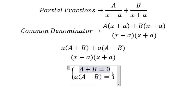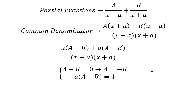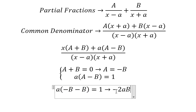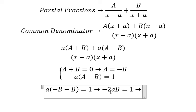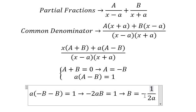So in this one we have A equals negative B. We move B to the right, so we have negative B. Then we simplify and divide both sides by negative 2a. After we have this, we put it back in here to find the value of A.